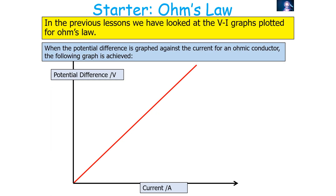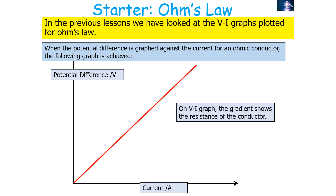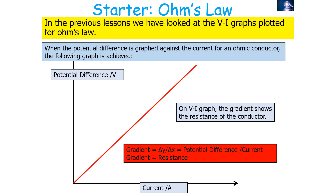In previous lessons, we've looked at VI graphs plotted for Ohm's law. When potential difference is graphed against current for an ohmic conductor, the following graph is achieved. On a VI graph, where V is on the y-axis and I the current is on the x-axis, the gradient shows the resistance of the conductor, because gradient is the change in y over the change in x — so it's potential difference over current, which gives R equals V over I, therefore the resistance.